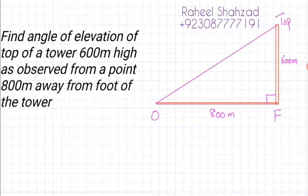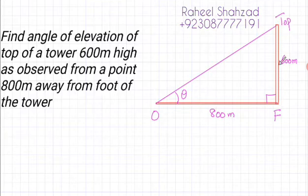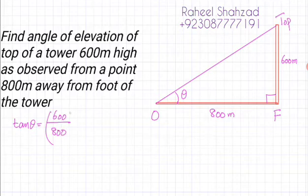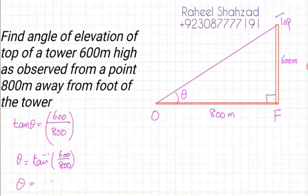We need to find this angle theta, which is the angle of elevation. From basic trigonometric ratios, this is the perpendicular (opposite) side and this is the adjacent side. Opposite over adjacent gives us tan theta. So tan θ = 600 / 800, and therefore θ = tan⁻¹(600/800).